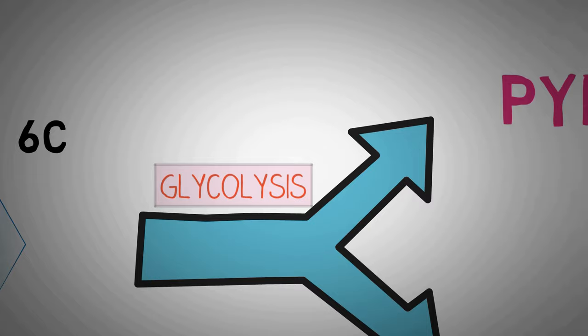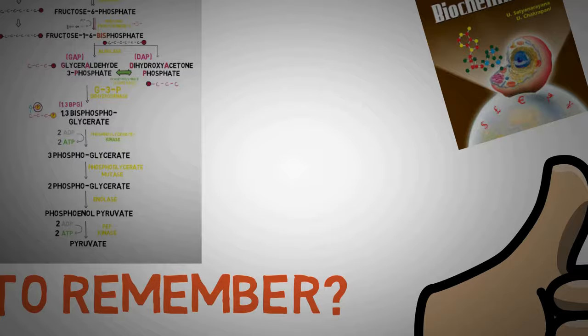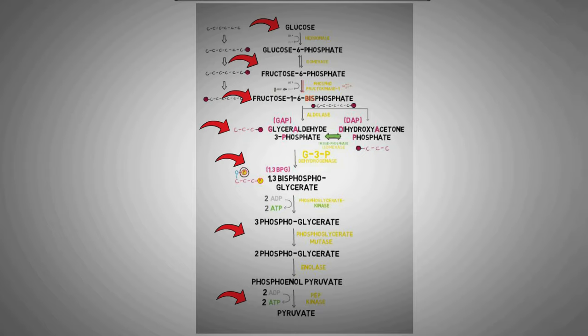Now this breakdown involves 10 steps, and all these steps use enzymes that make the reactions possible. To remember glycolysis in a better way, you first need to remember all the intermediate products that are formed in the pathway of glycolysis, and then we will try to memorize the various enzymes that are involved in the pathway at different steps.